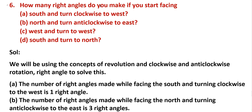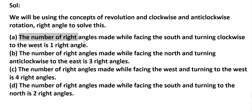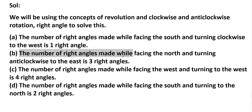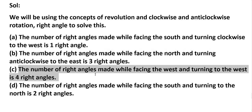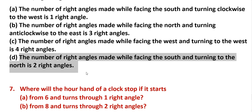Sixth problem: how many right angles do you make if you start facing south and turn clockwise to west? A: south turning clockwise to west — one right angle. B: north turning anticlockwise to east — three right angles, because north to east is three-fourths. C: west turning to west — four right angles, complete revolution. D: south turning to north — two right angles, because south to north is half rotation.